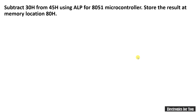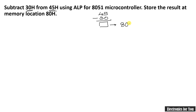And here is the program. Subtract 30H from 45H. It means that you have to subtract 30H from 45H, and whatever the result is, you have to store this result at memory location 80H, that is the internal RAM location.